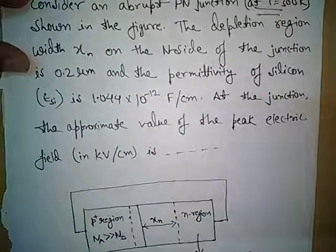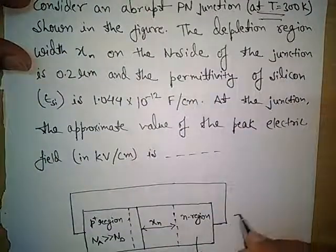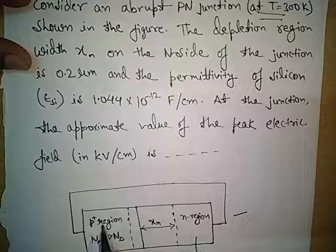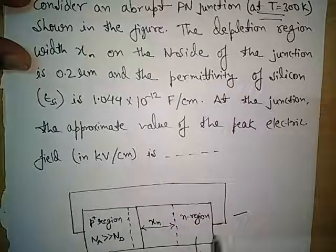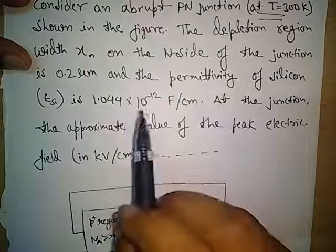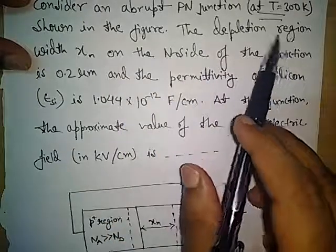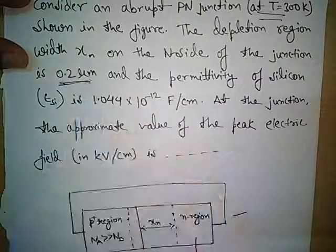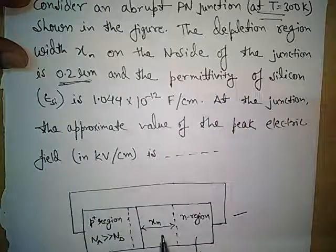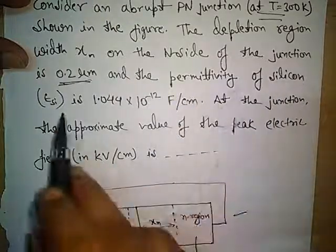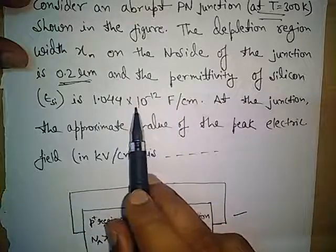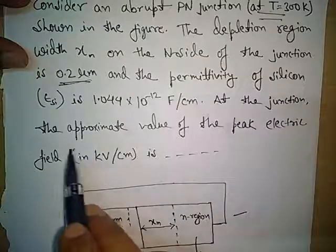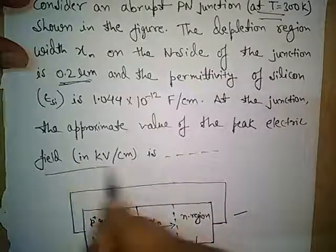In the figure, we have the p-n junction. There is a p-region and there is an n-region. P-plus means highly doped region and the n-region is lightly doped. The depletion region width on the n-side of the junction is 0.2 micrometer. The permittivity of silicon is given as 1.044 into 10 to the power minus 12 farad per centimeter. At the junction, the approximate value of the peak electric field is what?